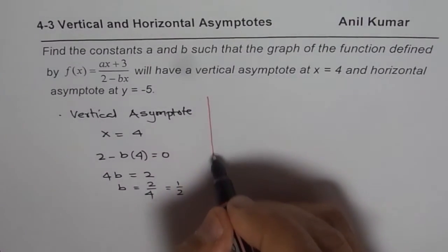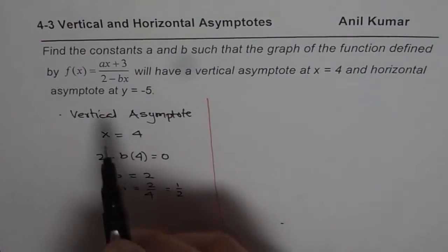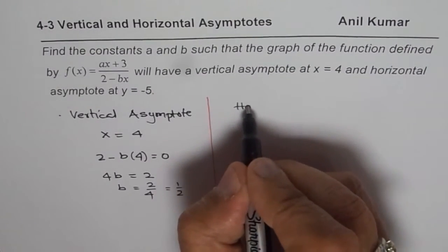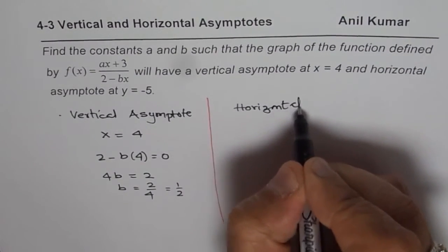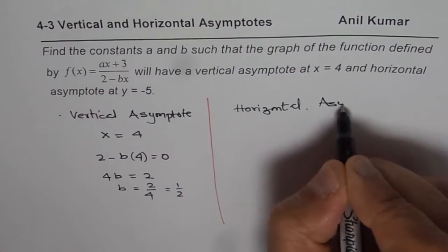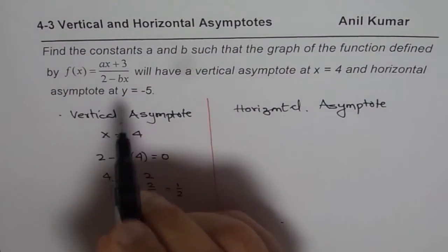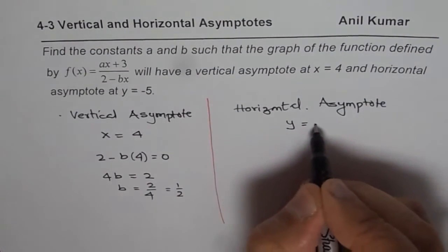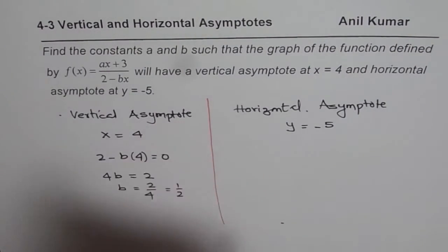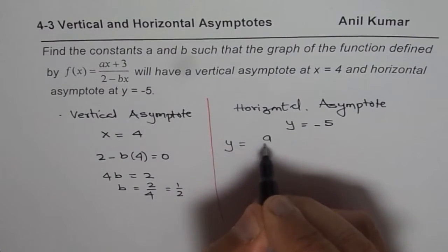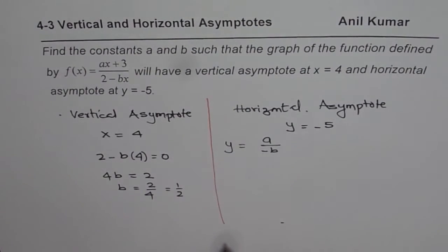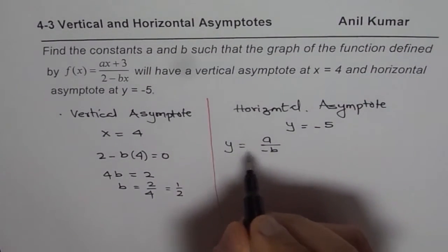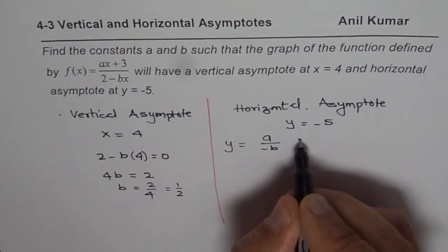The second part is to find the constant a, which is related to the horizontal asymptote. The degree of both numerator and denominator is the same, so the horizontal asymptote will be the ratio of the leading coefficients of the numerator and denominator. If x is very large, the denominator approaches minus b and the numerator approaches a, so the horizontal asymptote is at y equals a over minus b. This is given to us as minus 5.